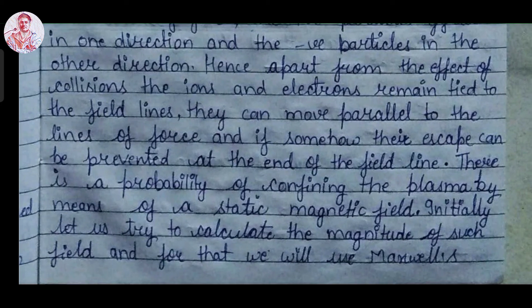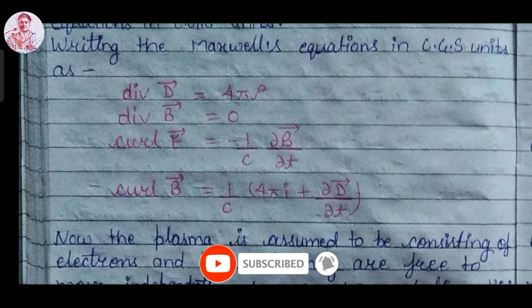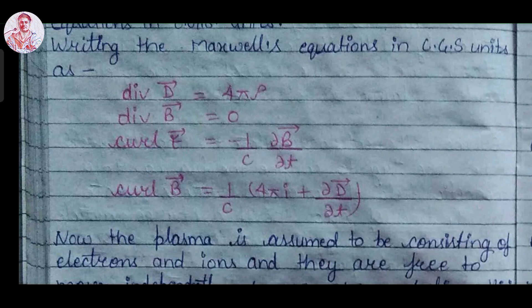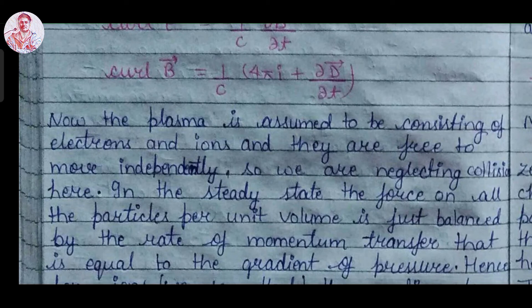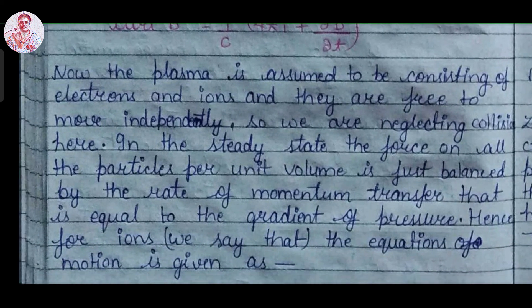Let us calculate the magnitude of the required magnetic field using Maxwell's equations. In CGS units, Maxwell's equations are: divergence of D equals 4 pi rho, divergence of B equals 0, curl of E equals minus 1 over C times del B over del T, and curl of B equals 1 over C times (4 pi I plus del D over del T). The plasma is assumed to consist of electrons and ions that are free to move independently, and we are neglecting collisions. In steady state, the force on all particles per unit volume is balanced by the rate of momentum transfer, which equals the gradient of pressure.